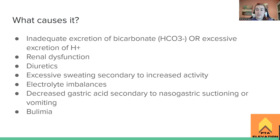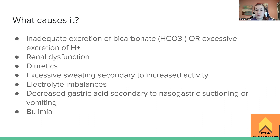Decreased gastric acid is another cause. Remember, our stomach is super acidic — around pH 2. If we lose a lot of stomach acid, that can affect our blood through the exchange of hydrogen ions and proton pumps in the stomach. If we start losing stomach acid, we start losing acid in general, causing our cells to become more basic. This can happen due to vomiting, nasogastric suctioning from an NG tube, or bulimia — throwing up causes electrolyte imbalances.